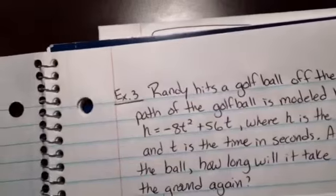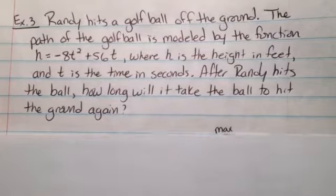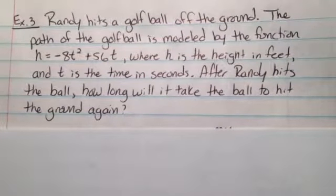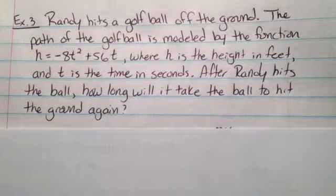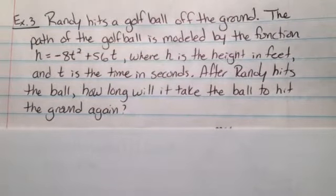Let's take a look at an example. Example 3: Randy hits a golf ball off the ground. The path of the golf ball is modeled by the function h = -8t² + 56t, where h is the height in feet and t is the time in seconds.